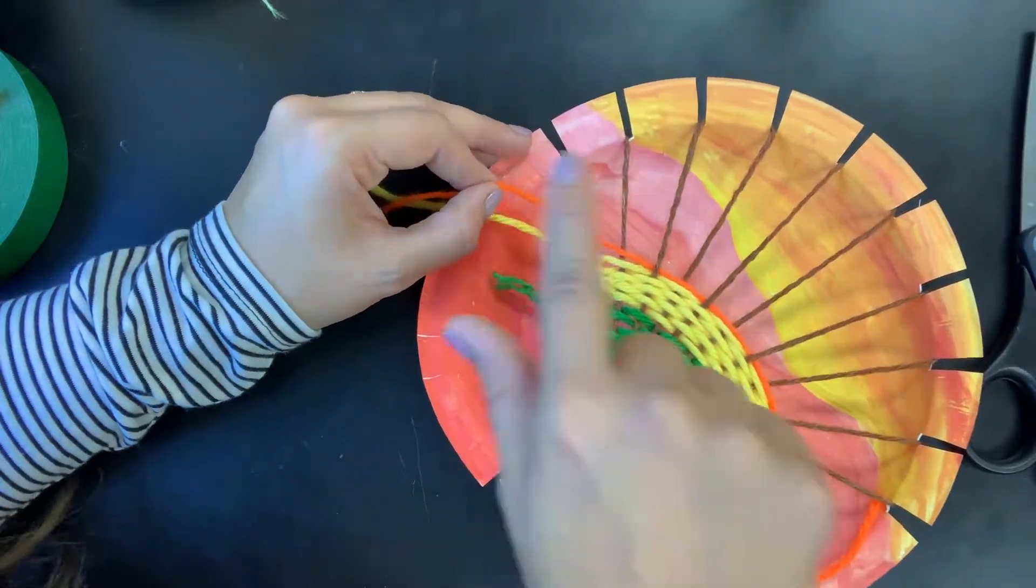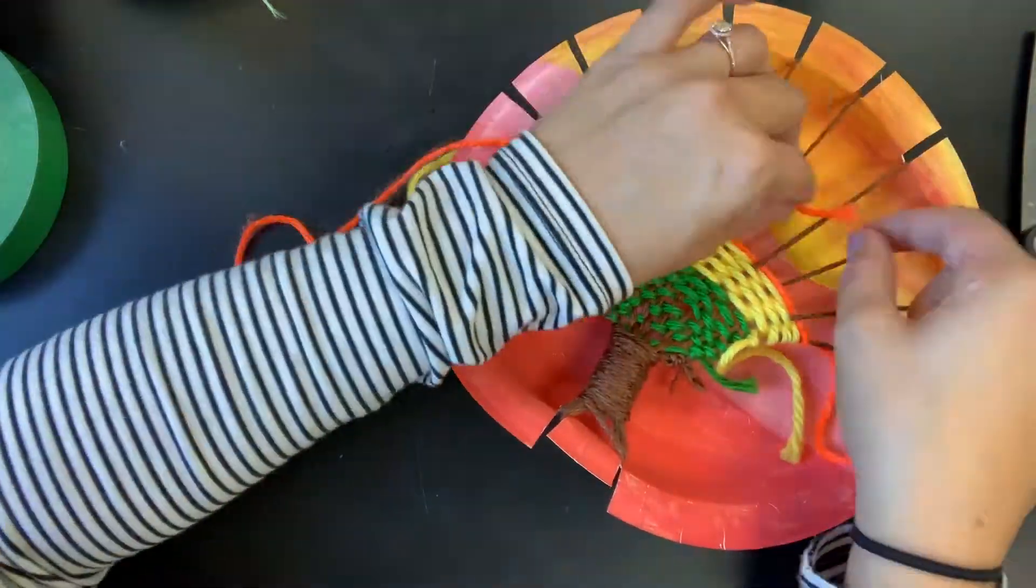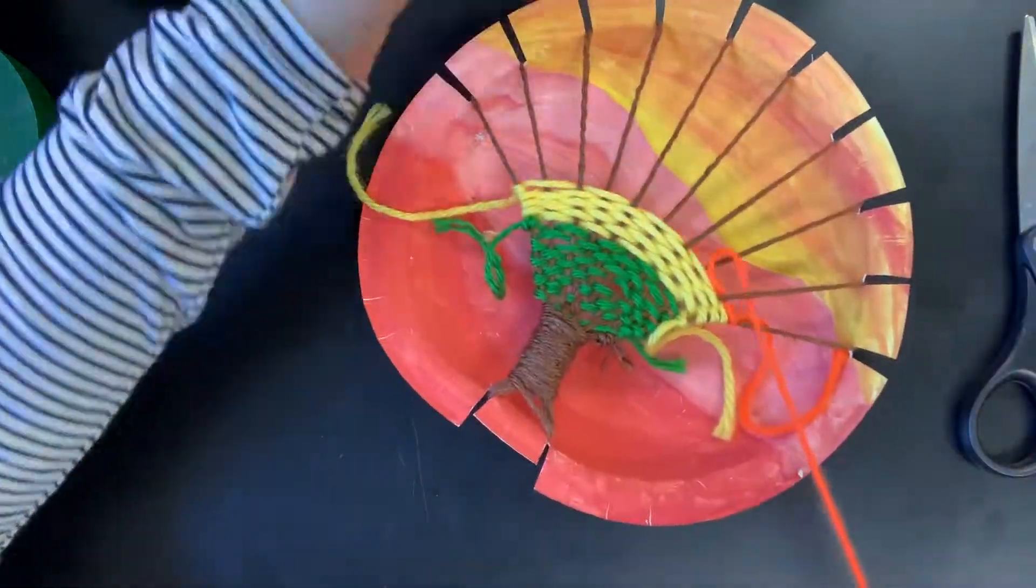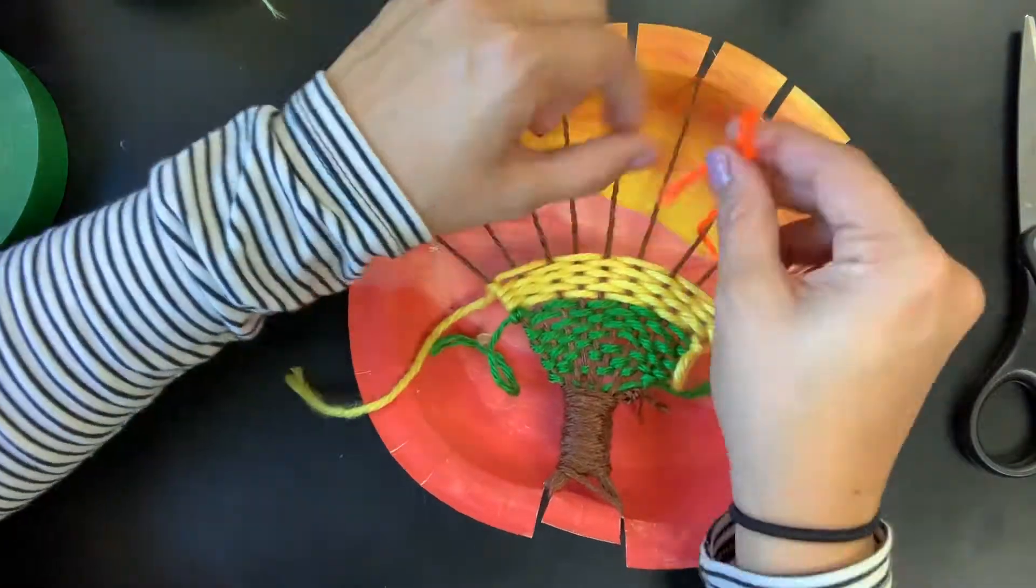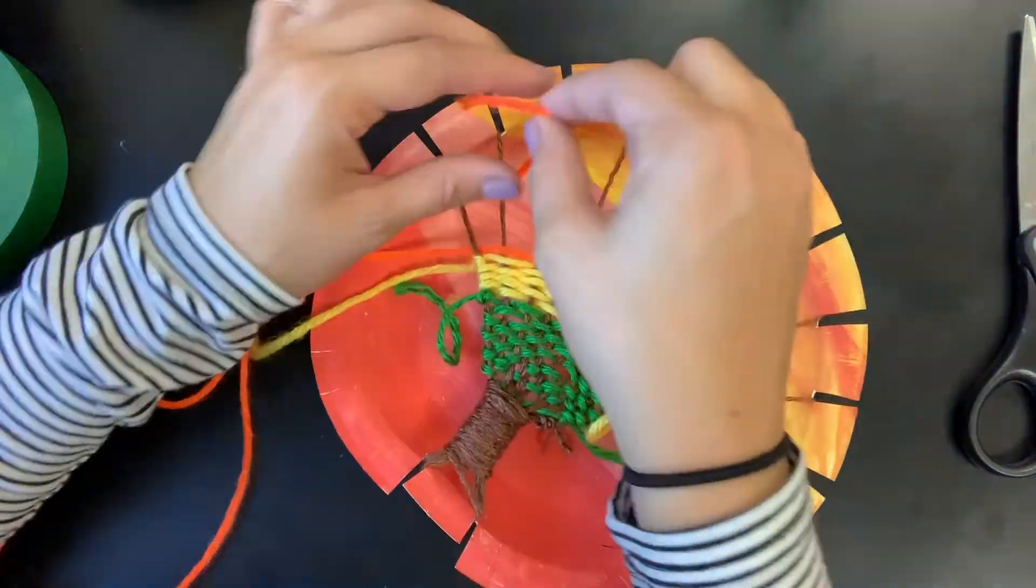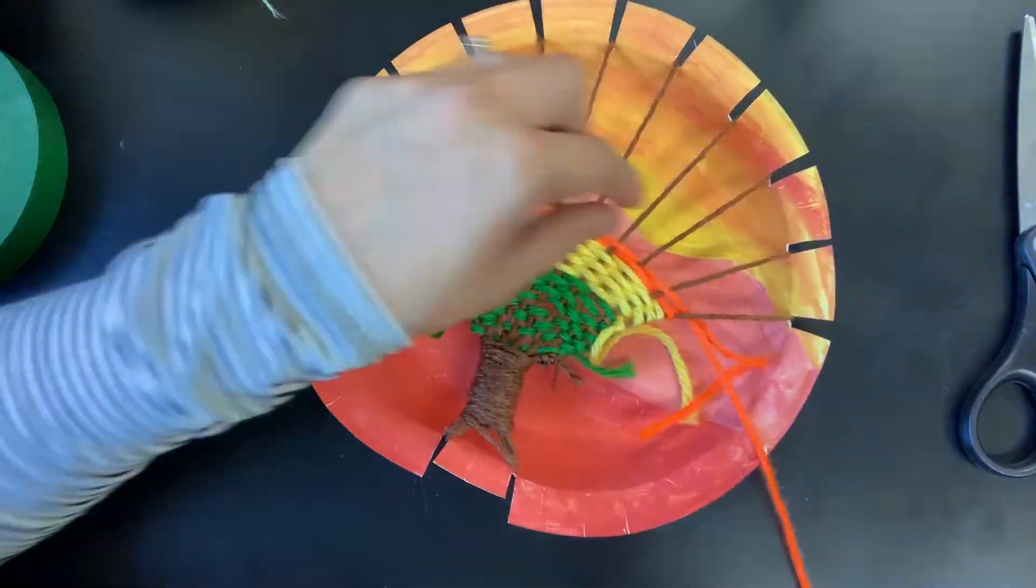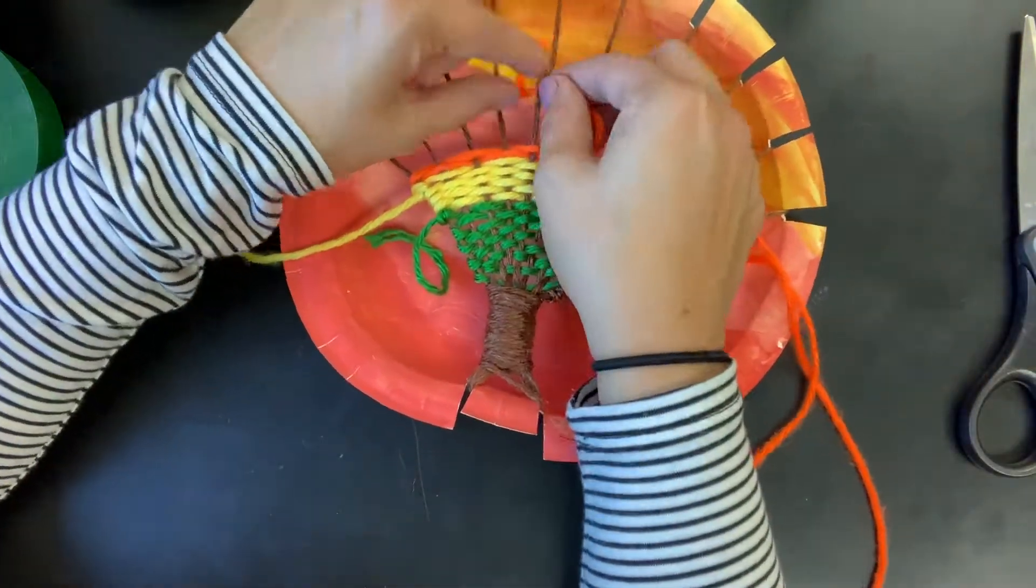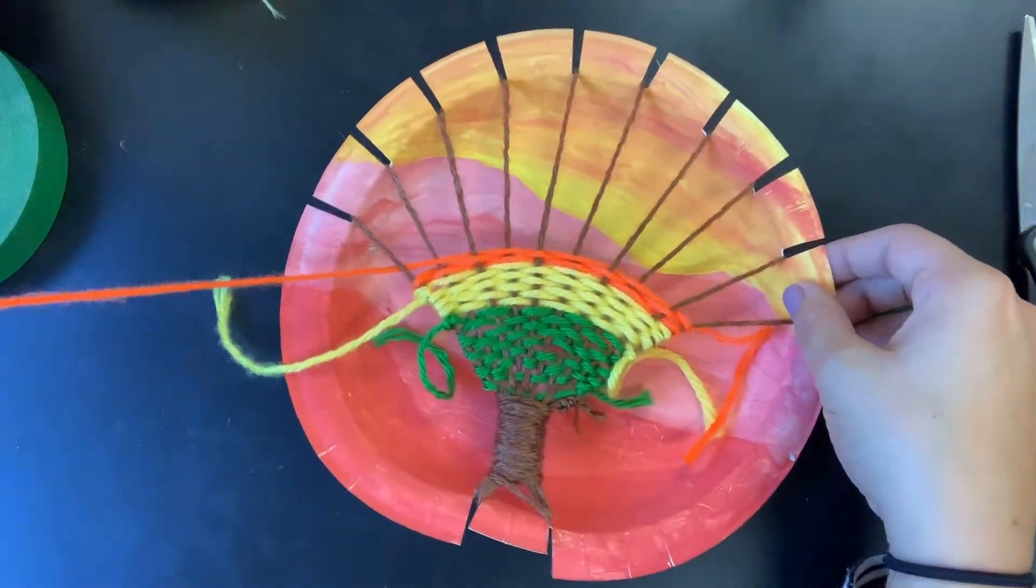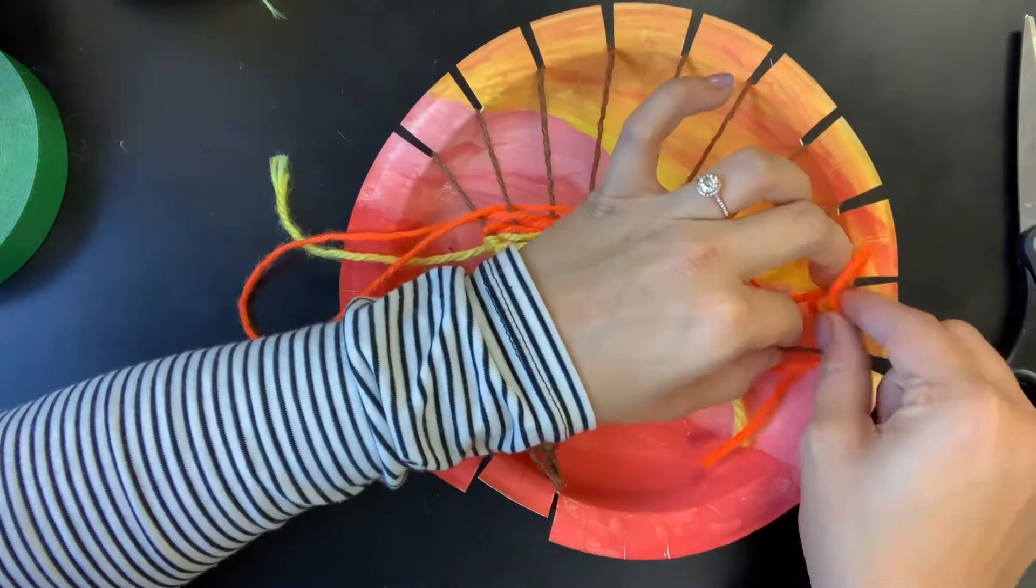Next I want to show you what would happen if you accidentally did not alternate. If I started out under and then went under again and went back, then my string would just come out and fall apart. So it's important that you make sure that if you ended under then you're going over and vice versa. If you mess up it's okay, just try again.